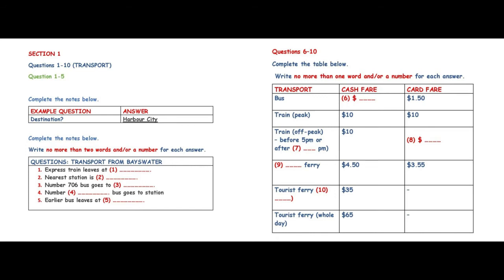Test 1. You will hear a number of different recordings, and you will have to answer questions on what you hear. There will be time for you to read the instructions and questions, and you will have a chance to check your work. All the recordings will be played once only. The test is in four sections. At the end of the test, you will be given ten minutes to transfer your answers to an answer sheet. Now turn to section 1.